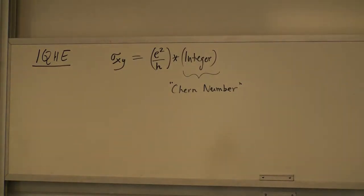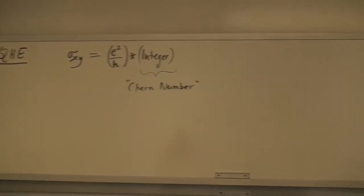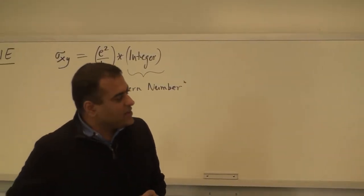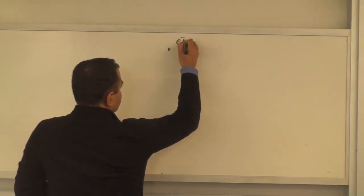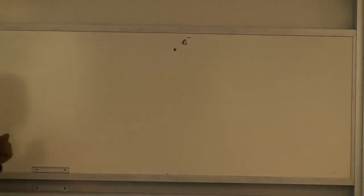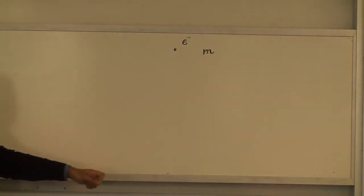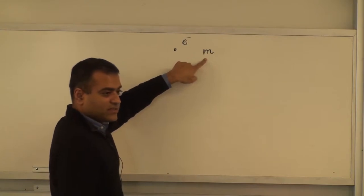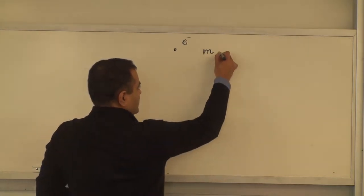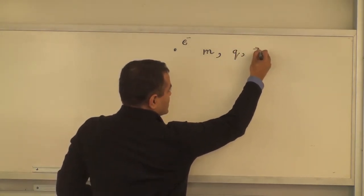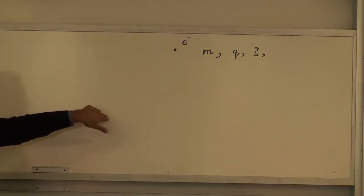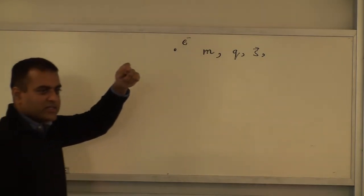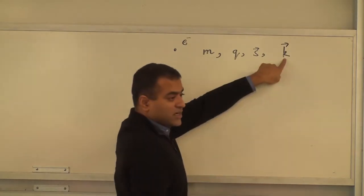An electron inside a crystal has four fundamental parameters: mass, charge, spin — which is angular momentum — and K, the crystal momentum (quasi-momentum). A free electron has just the first three; K arises because the electron can hop between atoms in a lattice. In the E-K diagram, you have bands like a valence band and a conduction band, and each state can have spin up or spin down.